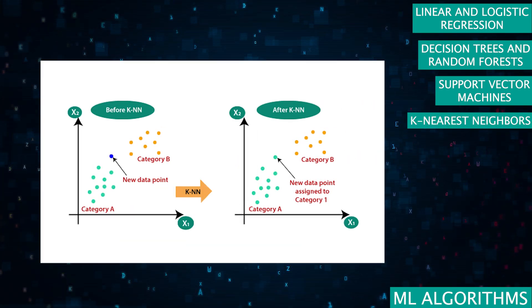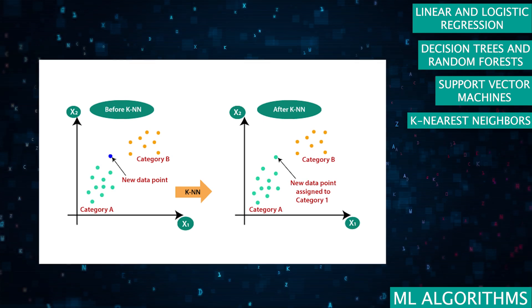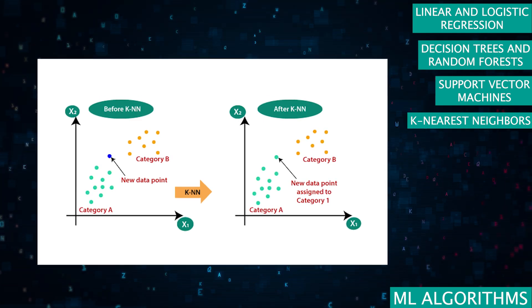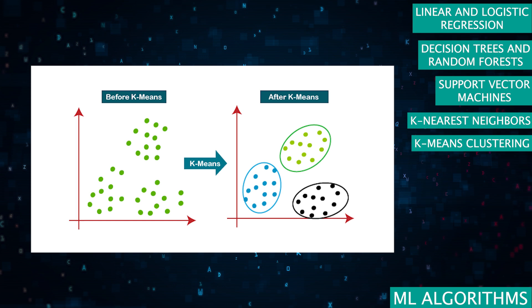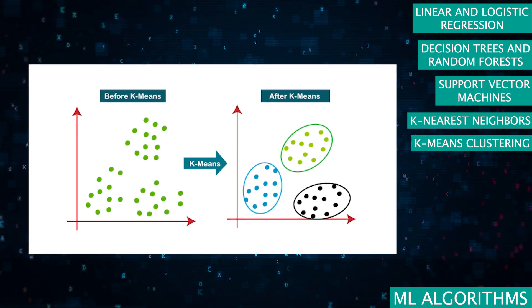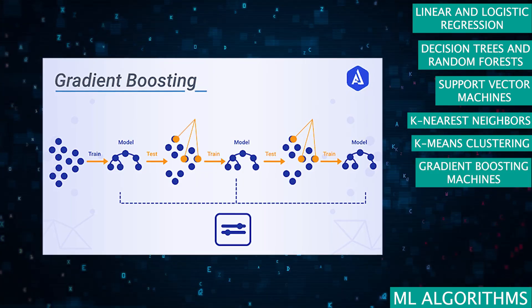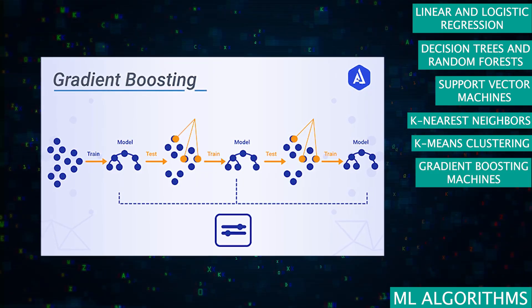K-nearest neighbors, a simple yet powerful algorithm for classification and regression tasks. K means clustering, the go-to algorithm for uncovering groups or patterns within your data. Gradient boosting machines, an ensemble technique that's potent in predictive analytics.